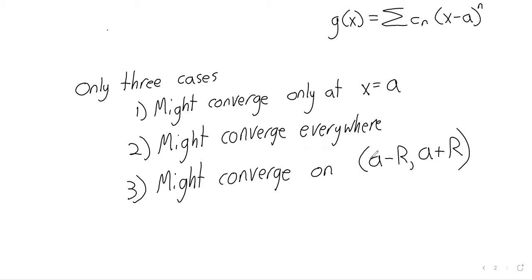None of that matters in any real-world context. For any actual problem, it's enough to know that it converges on an interval centered around the center, and what happens at the endpoints doesn't matter. When we have a power series representing a function, it represents it really well at the center and badly far away. The more terms you add, the better the approximation, but it's a slow process. In practice, we usually look at the first four terms.